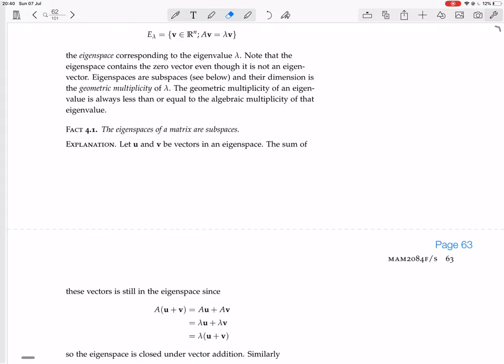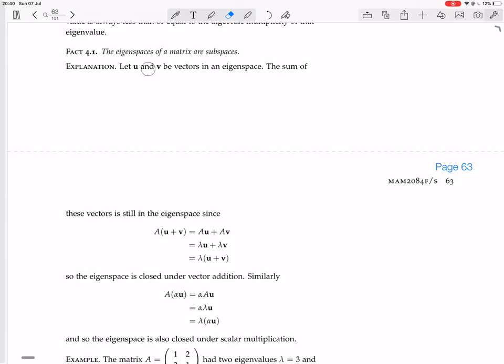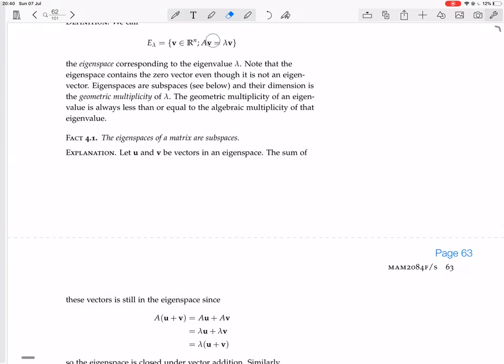Okay, so remember we said that we made sure that this contained the zero vector as well, so that it would be a subspace. Now we're going to prove that the eigenspace is a subspace. Here's this proof. Okay, so if u and v are vectors in an eigenspace, the sum of those vectors are still in the eigenspace. So we're saying that this thing called the eigenspace, which is, so far as we know, just now is just a subset.